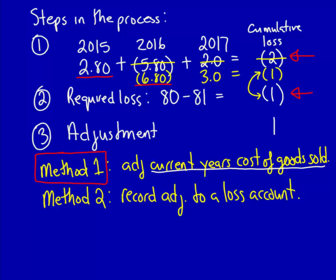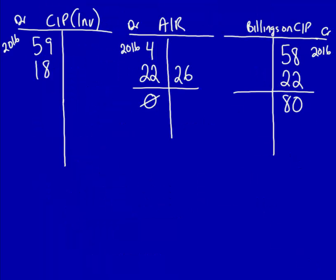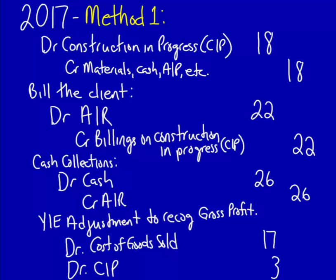Now we can do the last entries using Method 1. The entry to record costs and revenue: debit cost of goods sold $17, credit revenues $20, and debit CIP for the difference of $3. Updating the T-accounts, we have a debit to CIP for $3, bringing the current total in CIP to $80 — the selling price of the contract. Now that the project is finished, we remove CIP and billings on CIP to make them zero: debit billings on CIP $80, credit CIP $80.